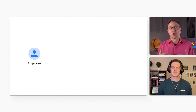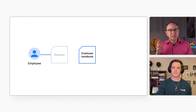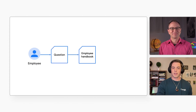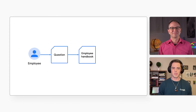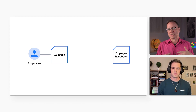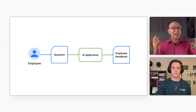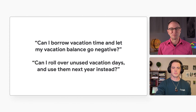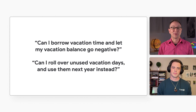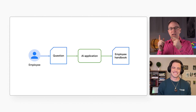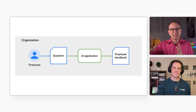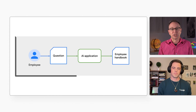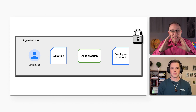So let's say an organization has a long employee handbook. Employees have questions about policies, but they don't want to read the whole handbook every time. The average employee handbook is 10 to 50 pages long. So this organization is building an AI application that employees can use to ask questions about policies. But they want to make sure none of their employee handbook goes into some other training data set where it might show up outside of their organization. They also need to make sure that questions their employees enter stay within the organization.